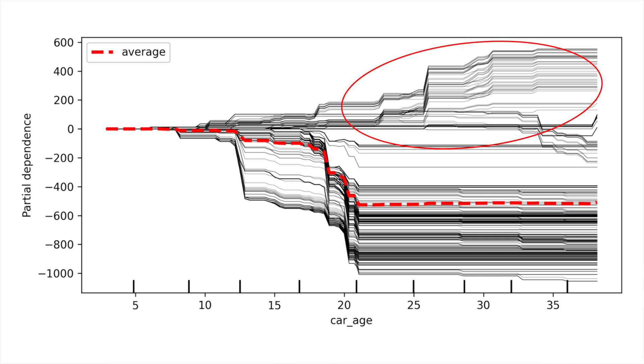Most of the lines follow the general trend. However, some of the higher lines increase. This suggests that, for those observations, price has the opposite relationship with car age. So, we have a subset of instances that have a different relationship with this feature. This suggests a potential interaction.